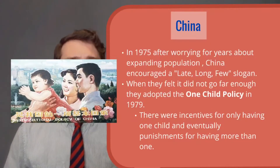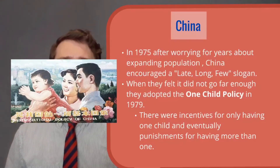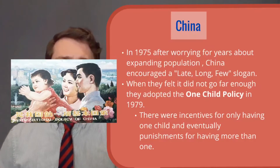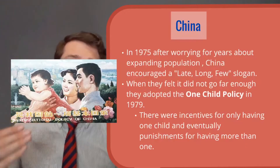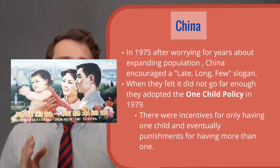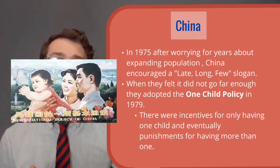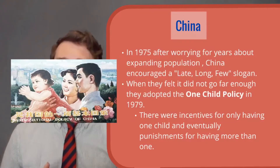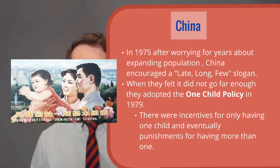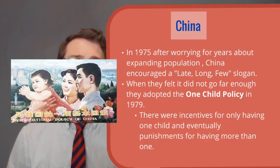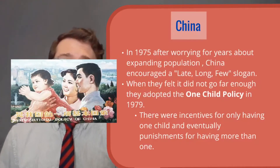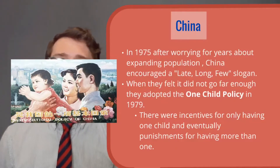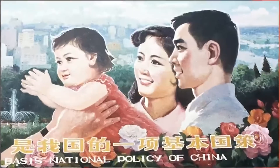In 1975, after worrying for years about their expanding population, China started to encourage a 'late, long, few' slogan — meaning have children later in life, wait longer between kids, and have fewer children. They felt this didn't go far enough, which gave us the world's most famous anti-natalist policy: the one-child policy. At first they offered incentives for having just one child, and then eventually started instituting punishments for having more than one. This policy lasted from 1979 all the way into 2015. Here's an ad showing this ideal Chinese family with just one child.